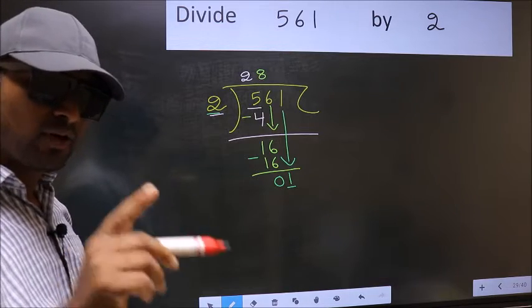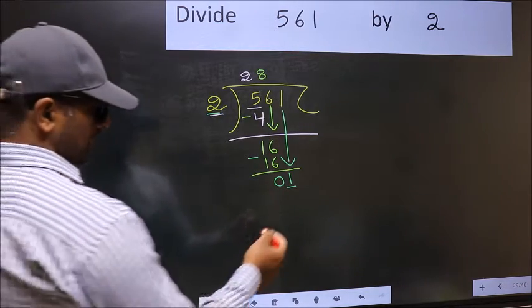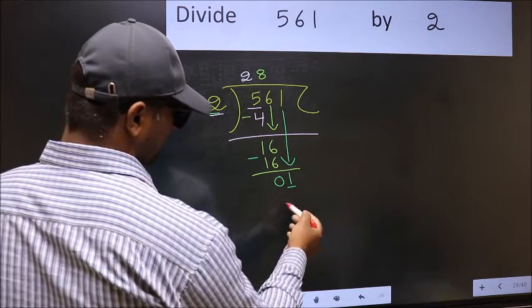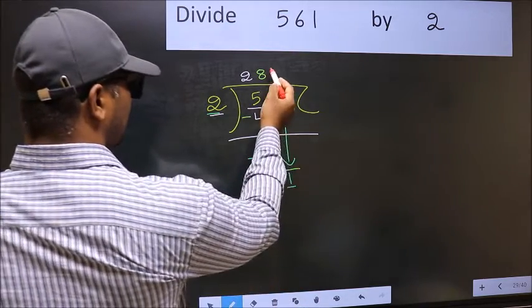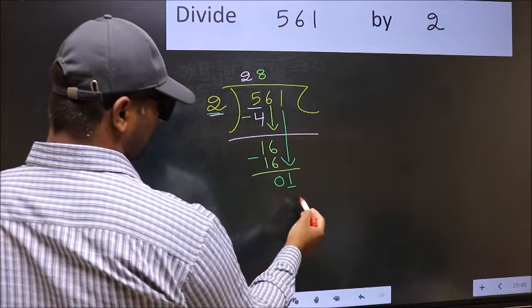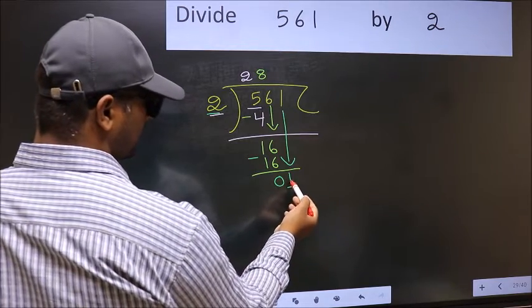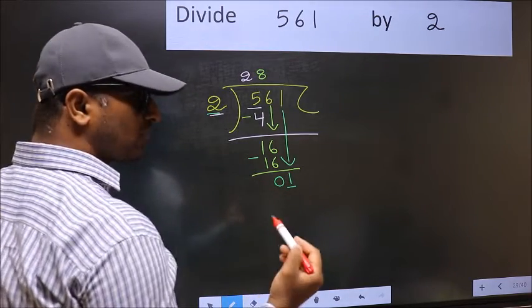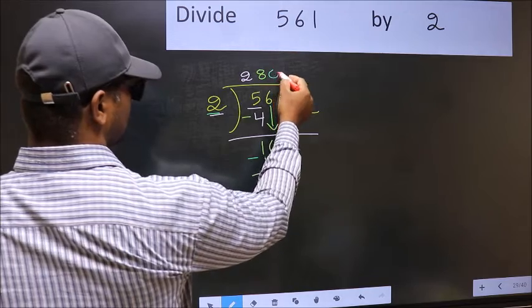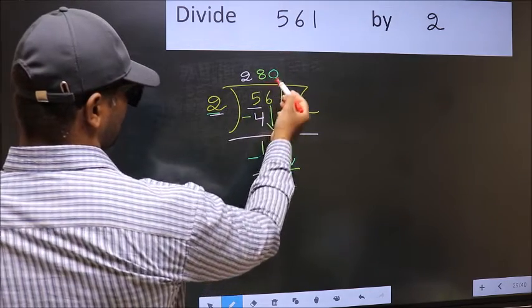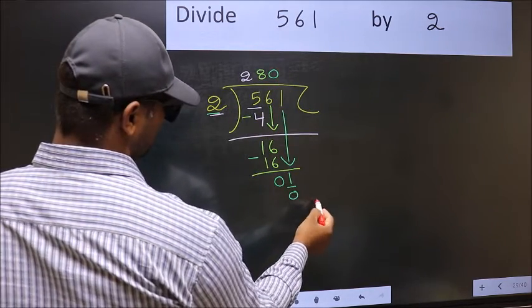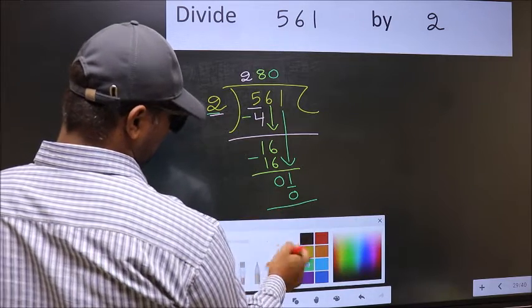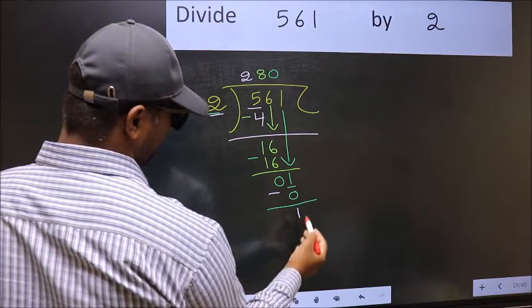Instead what you should think of is what number should we write here? If I take 1, I get 2 here. But 2 is larger than 1. So what we do is we take 0 here. So 2 x 0, 0. Now you subtract 1-0, 1.